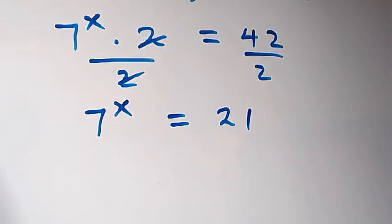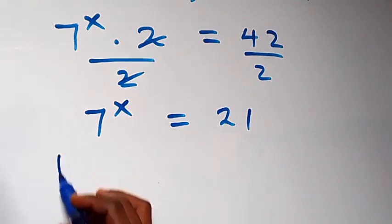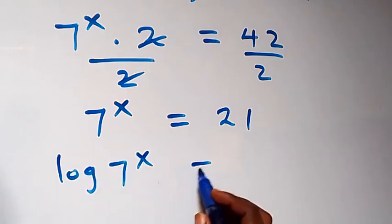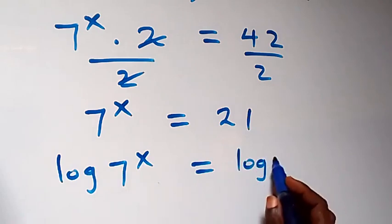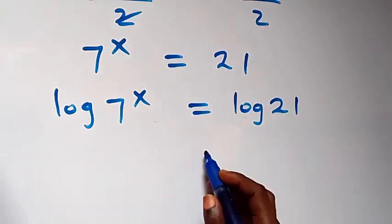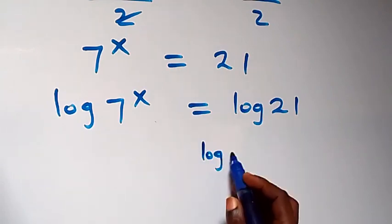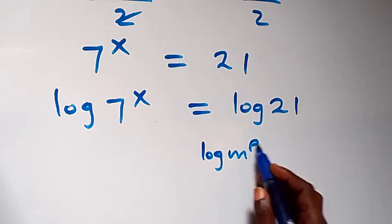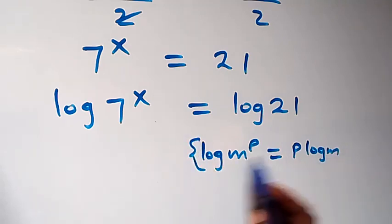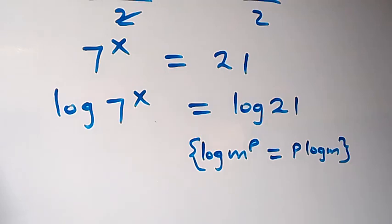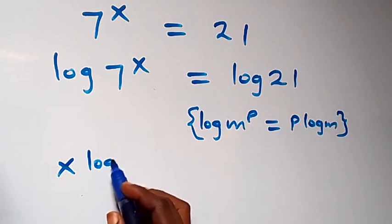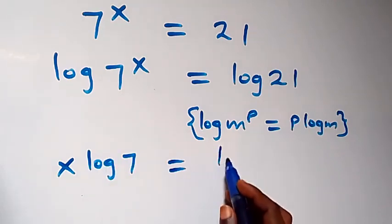Next step, we take the log on both sides. Then we have log of 7 raised to power x equals log 21. Applying the power rule of logarithms — log m raised to power p equals p log m — since x is the power, we have x log 7 equals log 21.